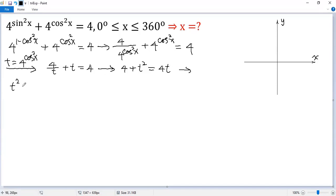So we get t² minus 4t plus 4 equals 0. That is a perfect square. (t minus 2)² equals 0. So we get t equals 2.